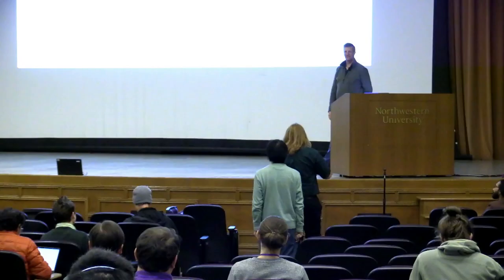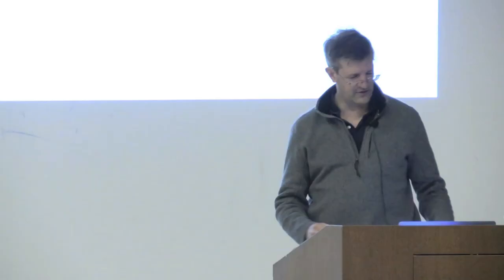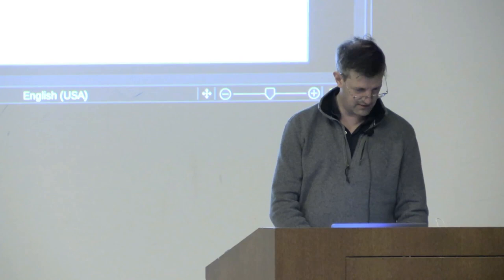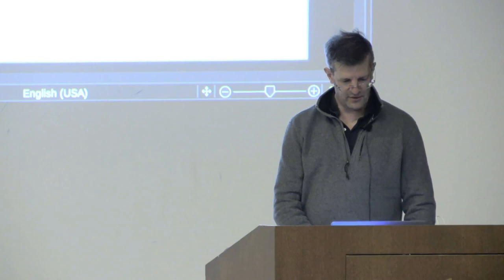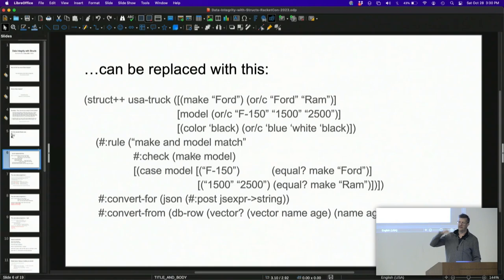Thanks for the talk. I'm Tonic Micken from Northwestern. I wanted to ask if you're able to express things like functional dependencies within a Struct++ type, or across types, which can be useful in laying out your database. Looking at the make-and-model-match check rule — this is checking an interdependency between the make field and the model field. And you can also transform fields based on these interdependencies, and then later rules will see the transformed value.